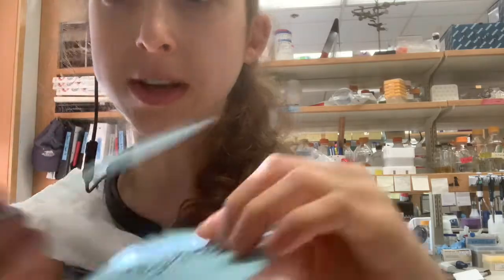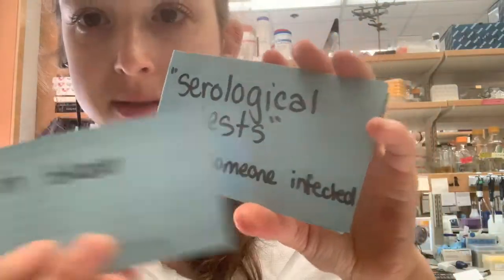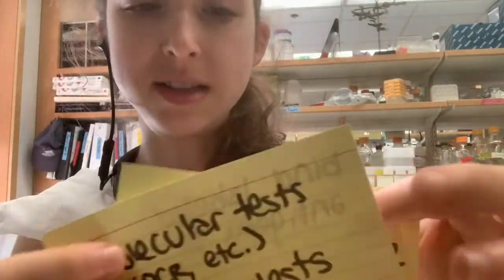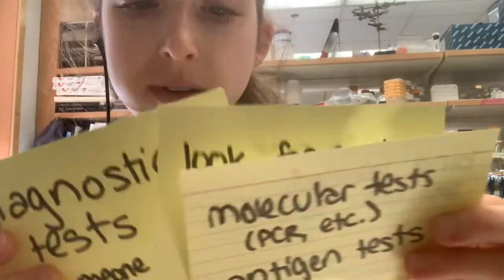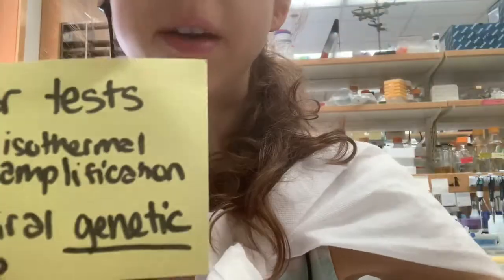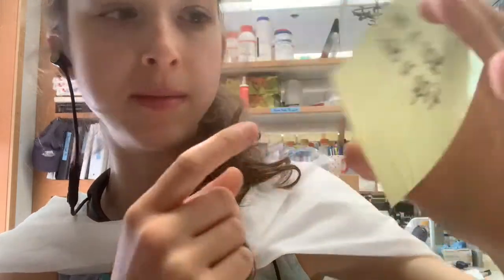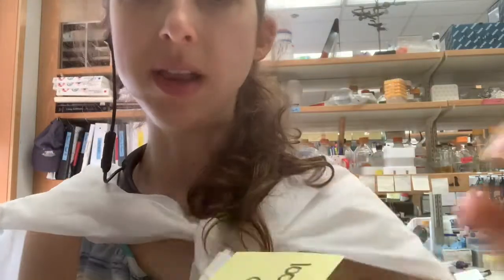Serological tests look in the blood, which is why they're called serological — blood serum is blood without the blood cells. With molecular tests, you're looking for evidence of the virus itself — this includes RT-PCR and isothermal amplification — and it's looking for viral genetic information. Instead of the blood, they're looking in a nose swab, mouth swab, or spit.